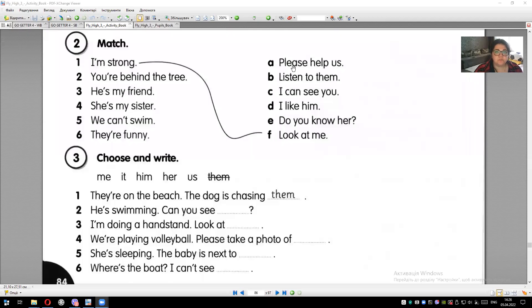Exercise 2. Our task is to match. We need to match. So, I'm strong, look at me. I'm strong, look at me. You are behind the tree. You're behind the tree. Let's look. You are behind the tree. You're behind the tree.